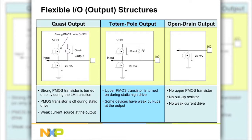Quasi output ports are easy to use since they can be configured as an input or an output without the need of a port configuration register. However, they only have a weak current source pull-up to keep the port high and cannot source more than 100μA per output.